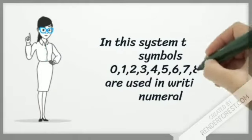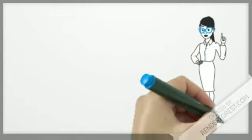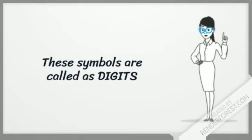In this system, the 10 symbols 0 to 9 are used in writing a numeral. These symbols are called digits.